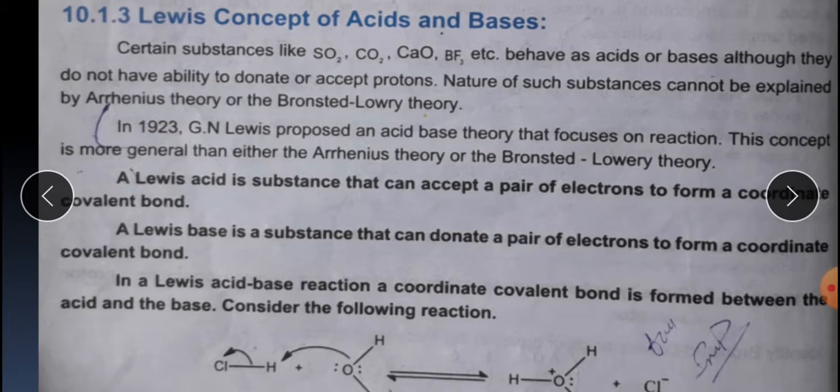After the second concept, a third concept came — the Lewis concept of acids and bases. This concept was needed because there were some acids and bases that had no protons, so calling them proton donors or proton acceptors was impossible. Substances like sulfur dioxide, carbon dioxide, calcium oxide, and boron trifluoride behave as acids or bases although they do not have the ability to donate or accept protons. The nature of such substances cannot be explained by Arrhenius theory or by the Brønsted-Lowry theory.